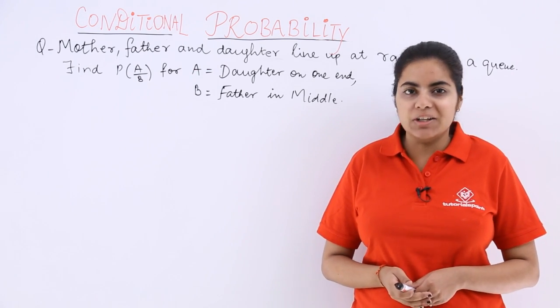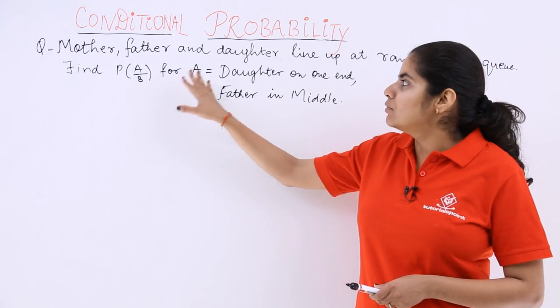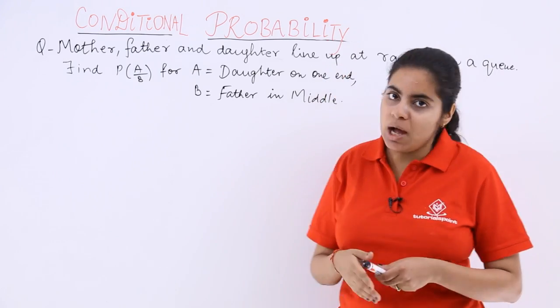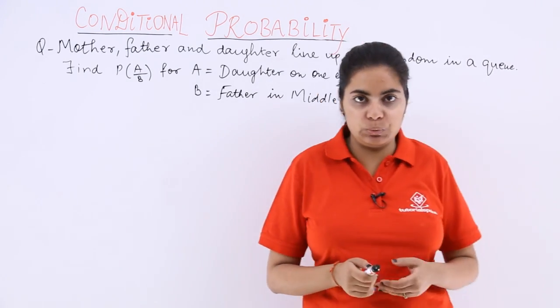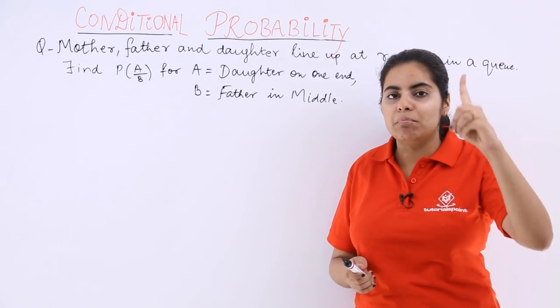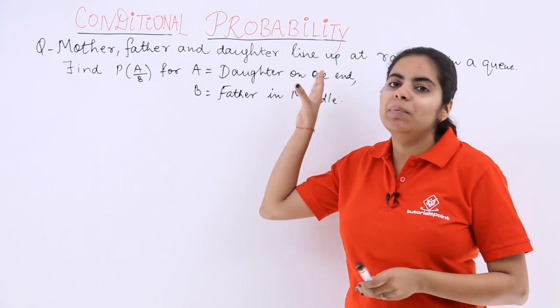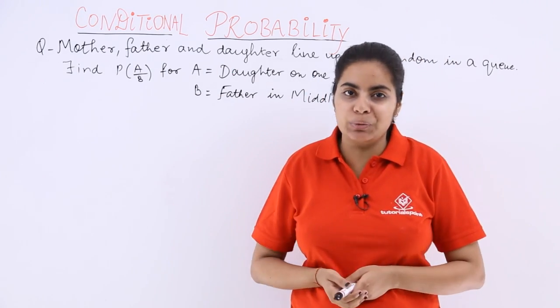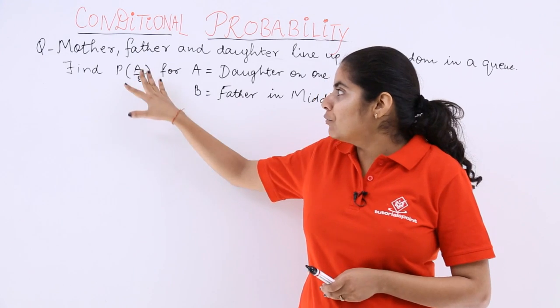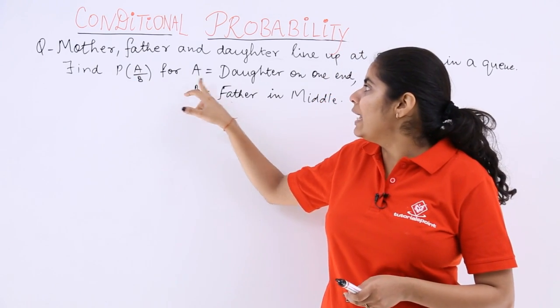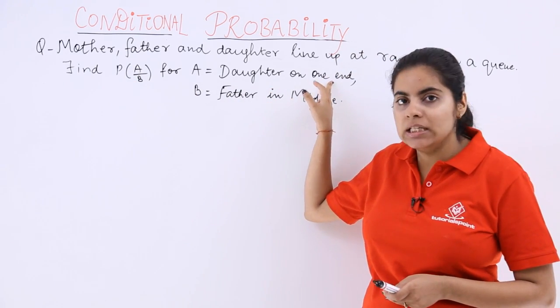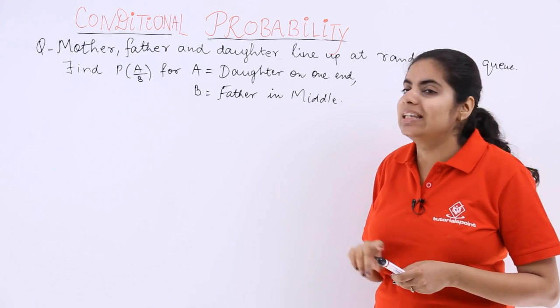Let's see this practice problem based on conditional probability. It says mother, father and daughter line up at random in a queue. So there are 3 persons involved in this question and they line up in a queue, probably for a family picture. Find P(A|B) for A equals daughter on one end, B equals father in the middle.